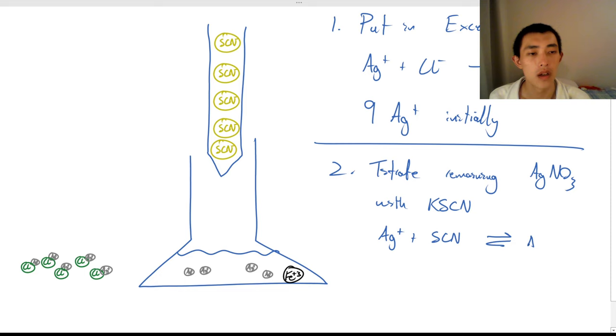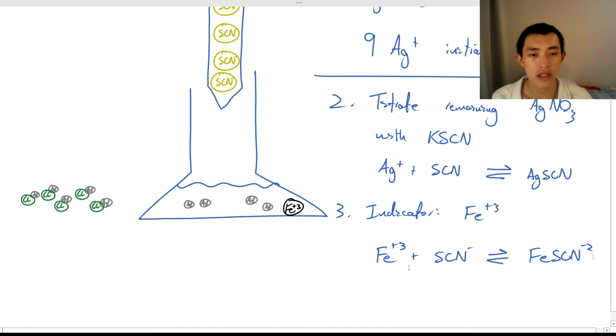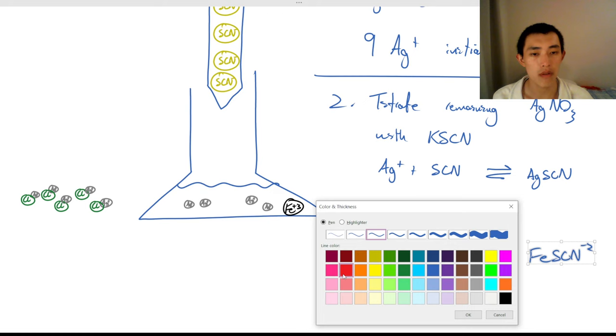Now finally, our indicator. Our indicator is actually just iron. It's just an Fe3+ iron. It's maybe from like an iron nitrate. And what's going to happen is that the iron, when it reacts with SCN, you probably would have seen this before in module 5, it creates iron thiocyanate. This guy is colorless, this guy is mostly colorless, but this becomes a blood red. It's a deep blood red, just like that.